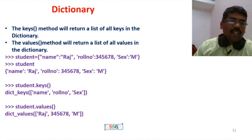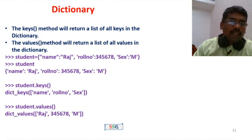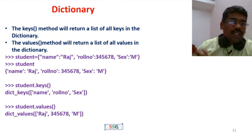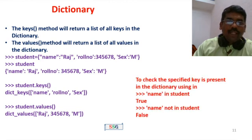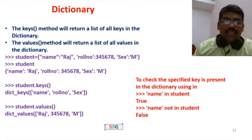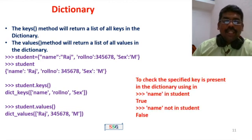Print roll number and section output to check. Then student.values() outputs dict_values: ['Raj', 3, 4, 5, 6, 7, 8, 'M']. Next, check if a specified key is present in the dictionary using the 'in' command.